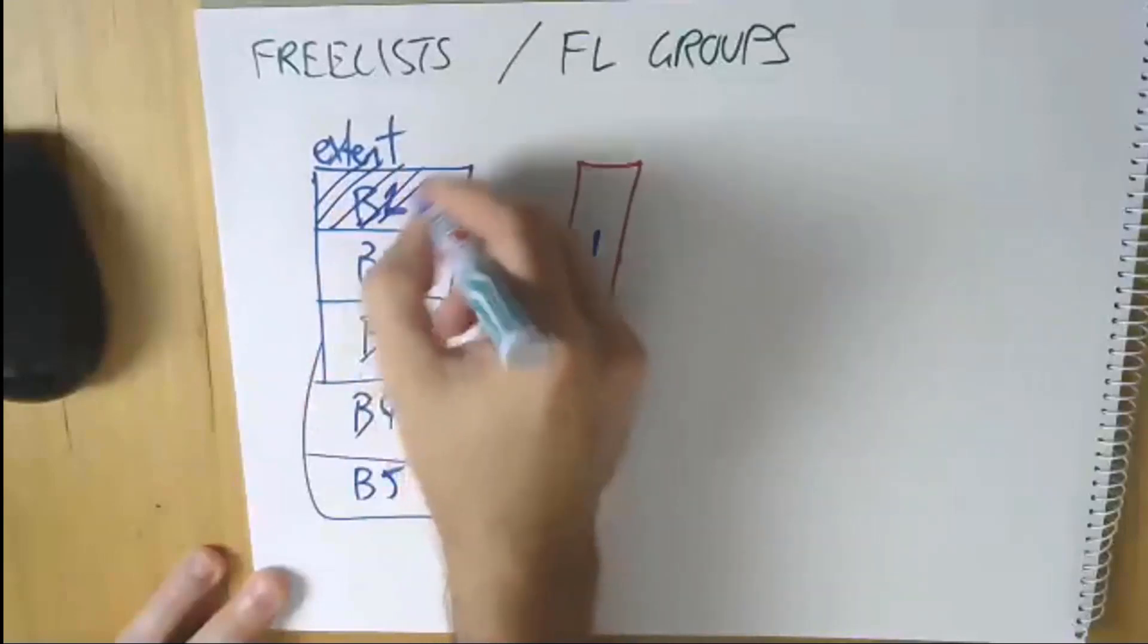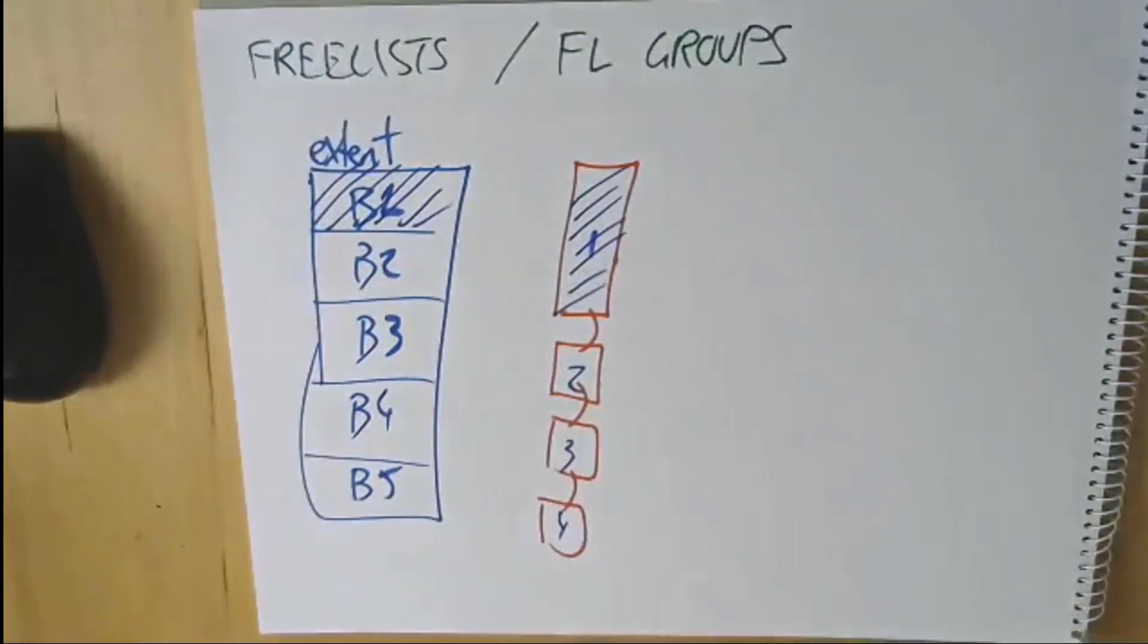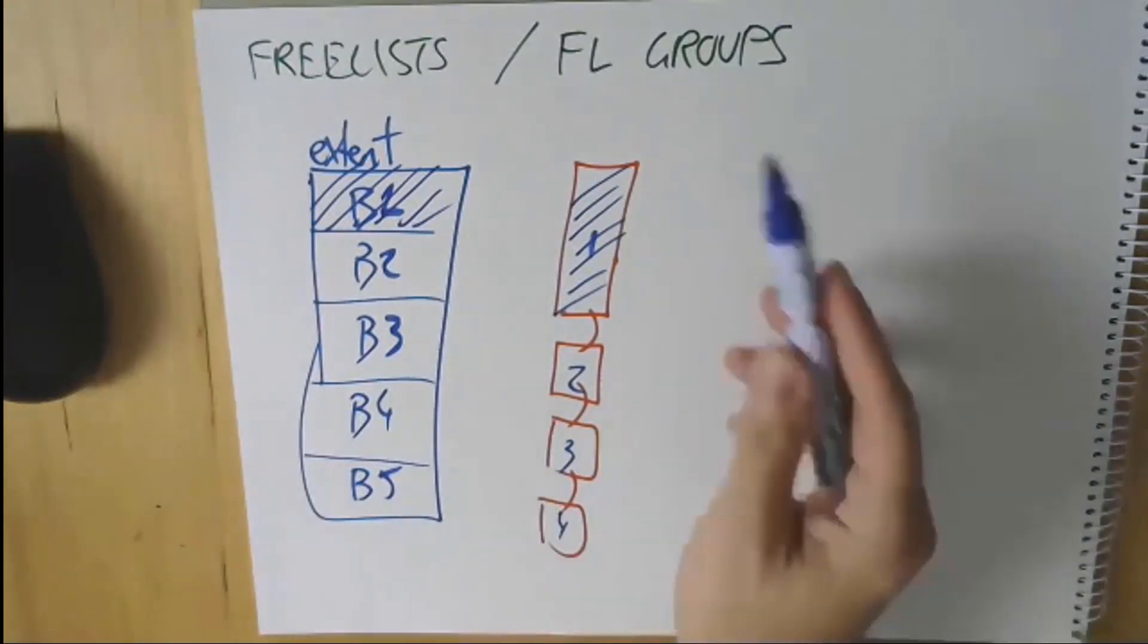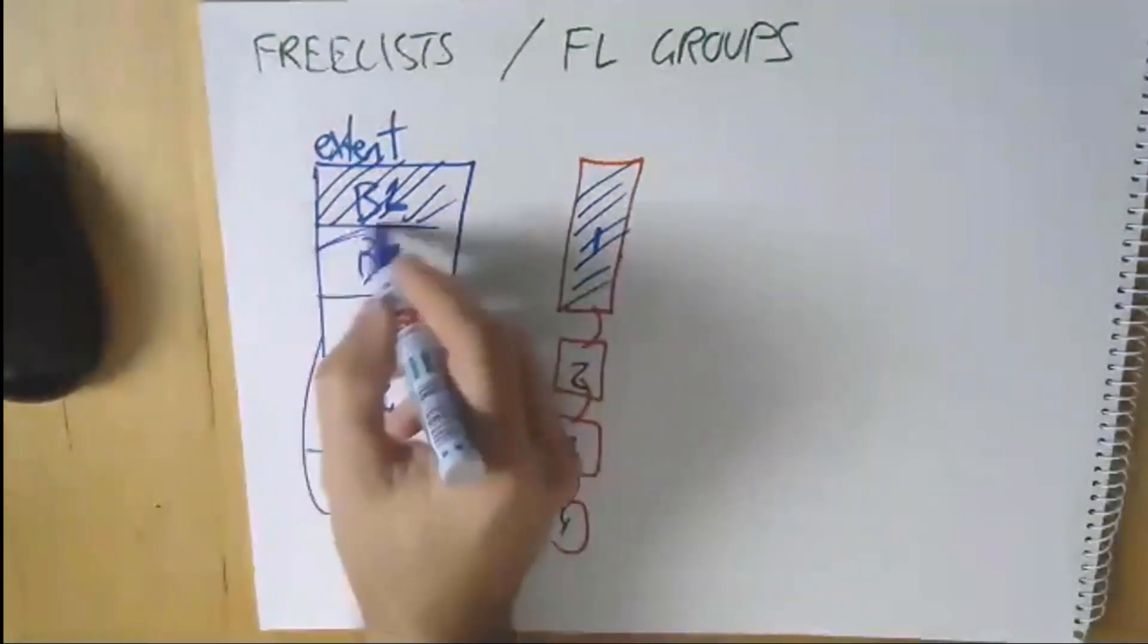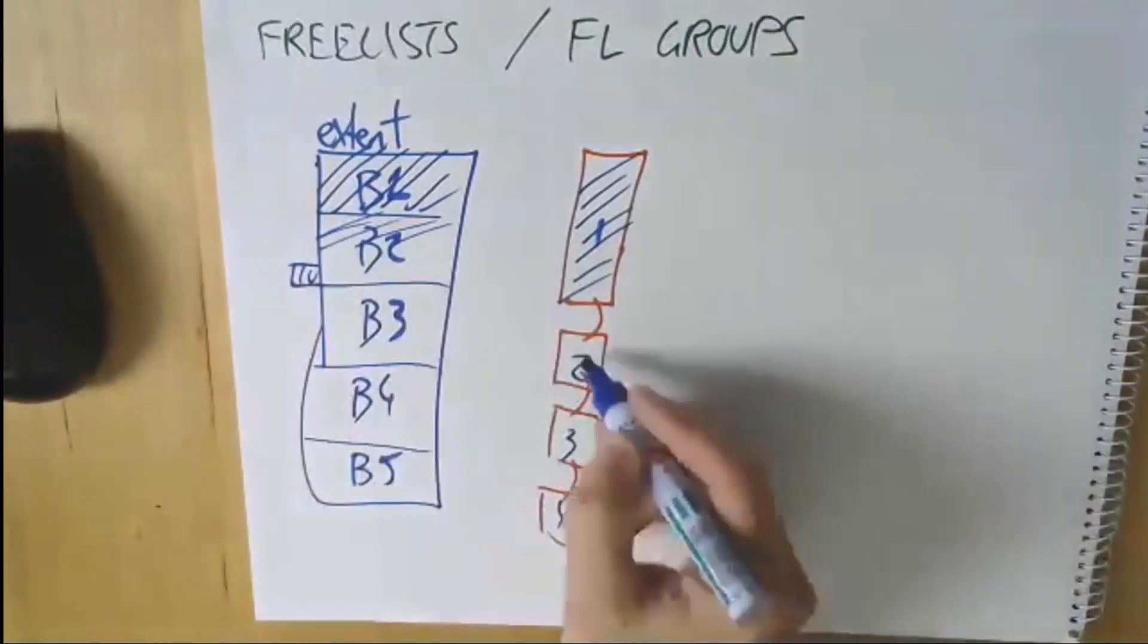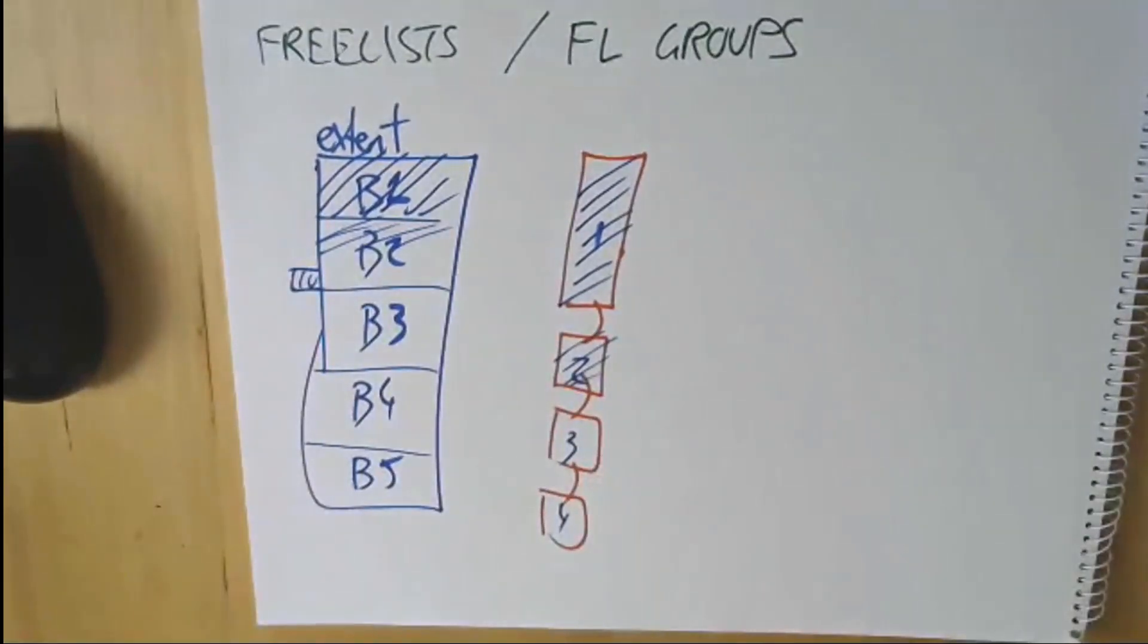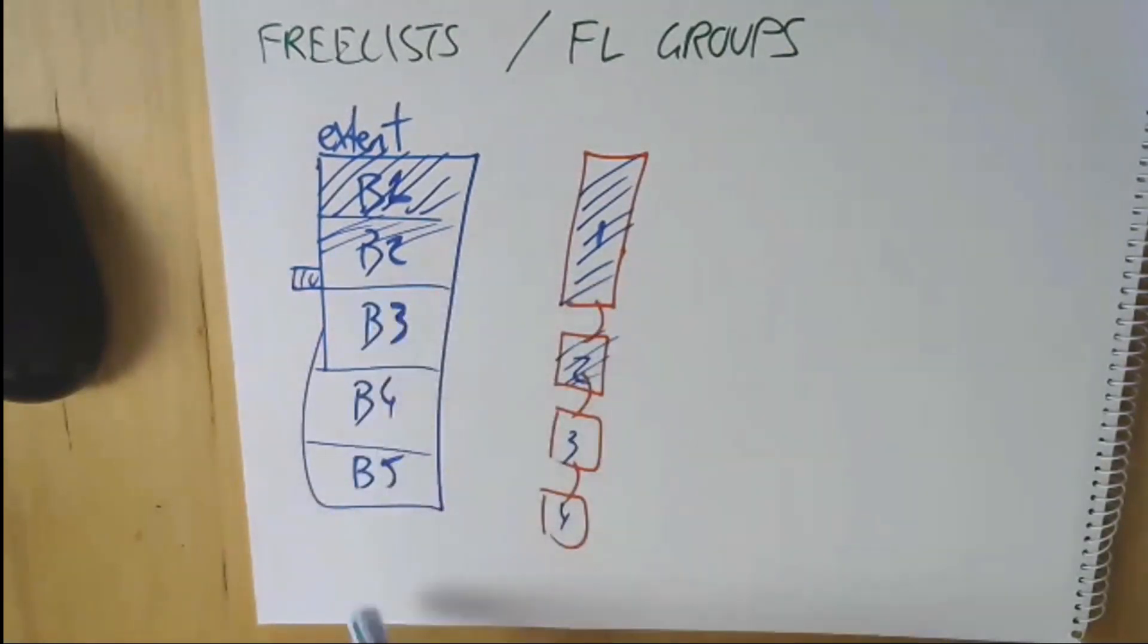As, for example, block number one became full, this guy would be removed from the freelist such that as we need to allocate space for new blocks, the database would say, oh, I need to add some more data. Block number two is on the freelist. It's available for use to put rows into. So we would start putting rows into block two. When it hit its percent free limit of 10%, it would be removed from the freelist.